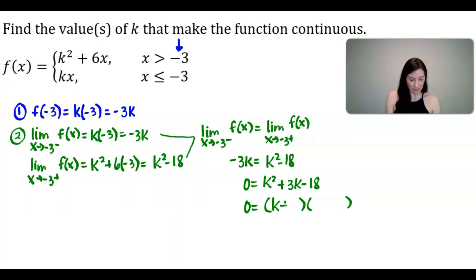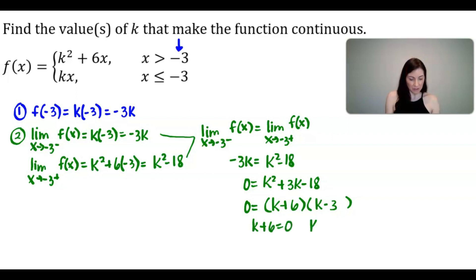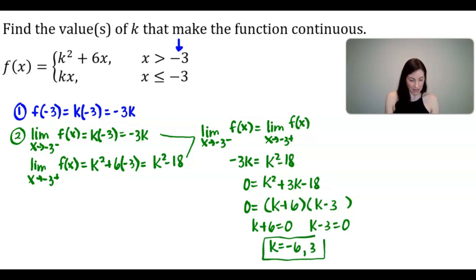We solve this by factoring. The quadratic factors into (K + 6)(K − 3). Setting each factor equal to zero, we get K equals negative 6 and K equals positive 3. These are the values of K that make this function continuous.